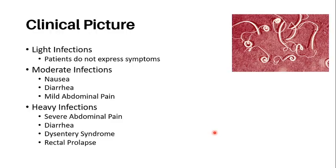The clinical picture of trituriasis is as follows. In light infections, patients with a very minimal worm burden are expected to not express any symptoms, or remain asymptomatic. In moderate infections, symptoms like nausea, diarrhea, and mild abdominal pain may appear. In heavier infections, both the pain and diarrhea are expected to increase in volume.